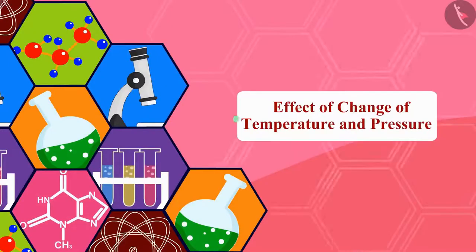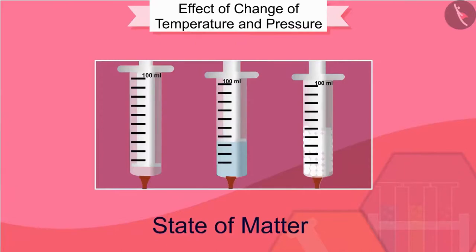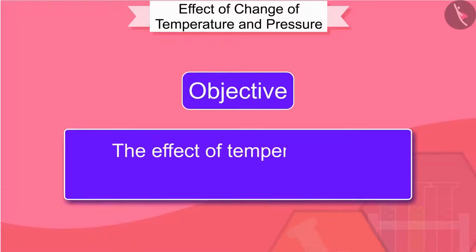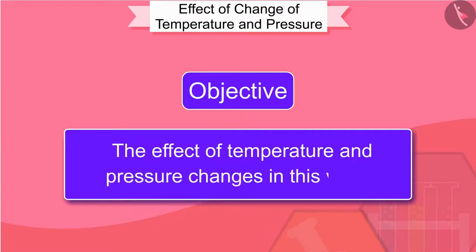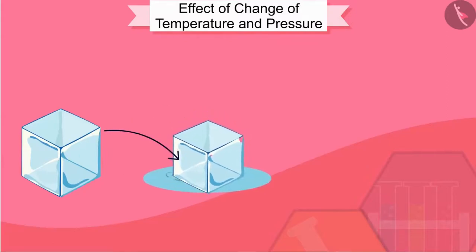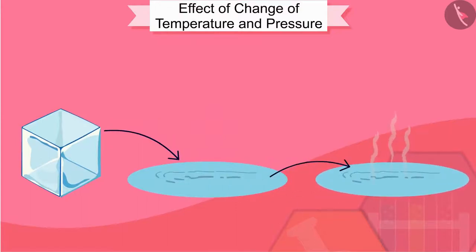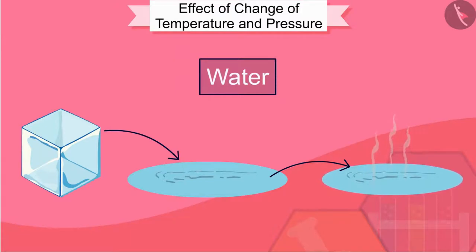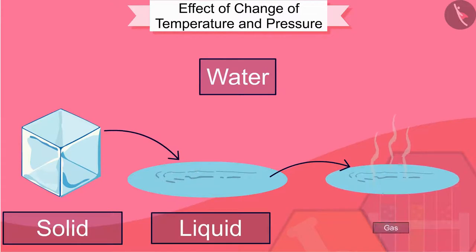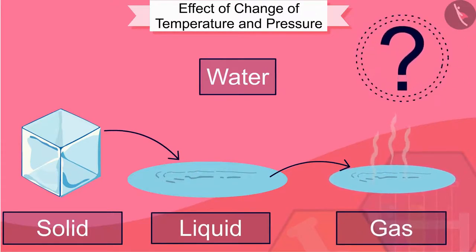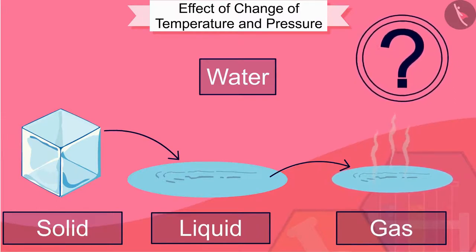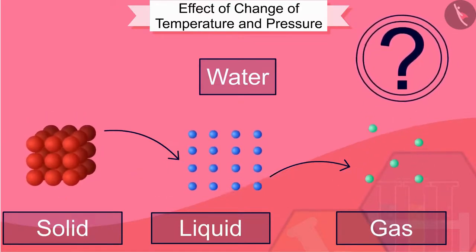In the previous video, we studied the states of matter. Let us now study the effect of temperature and pressure changes in this video. You must have seen ice melting in water and water changing into water vapour on heating. From these observations, we can say that water can exist in three states of matter — solid, liquid and gas. Let us find the answers to what happens inside matter when the state changes.